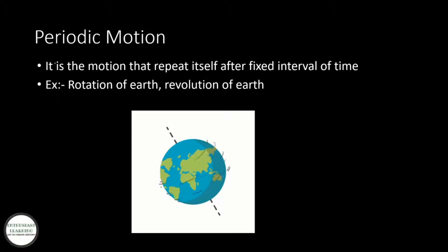First, periodic motion. It is the motion that repeats itself after fixed interval of time. Examples: rotation of Earth, revolution of Earth.